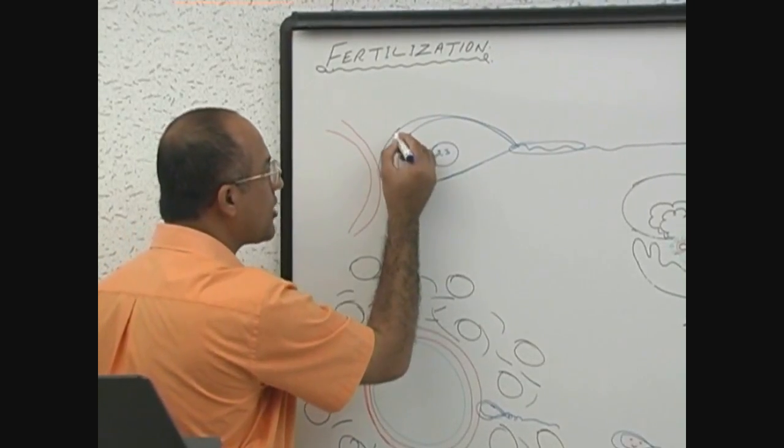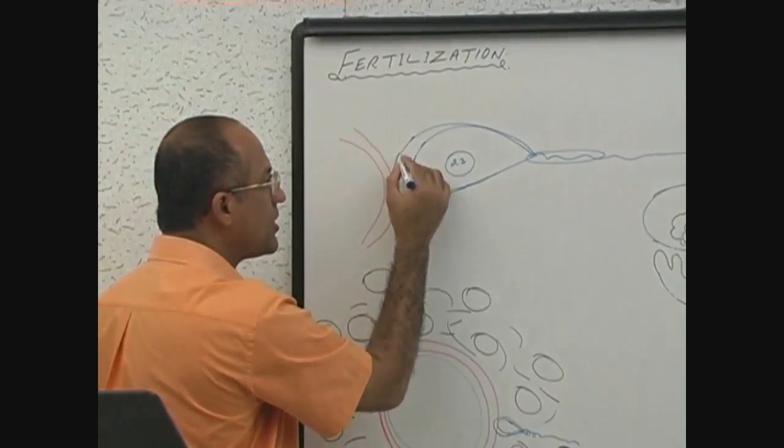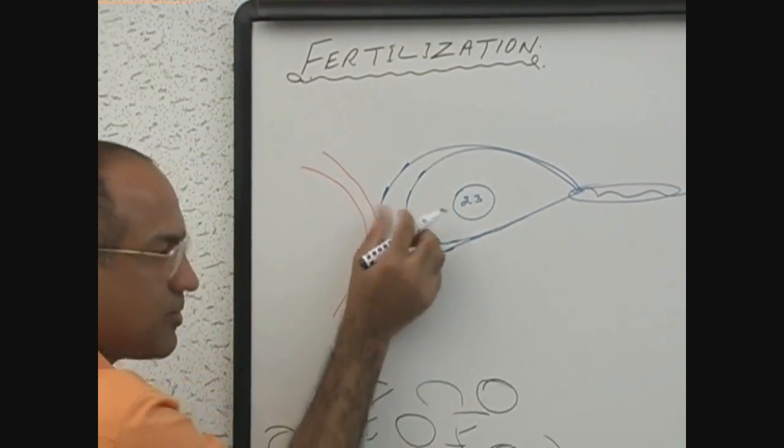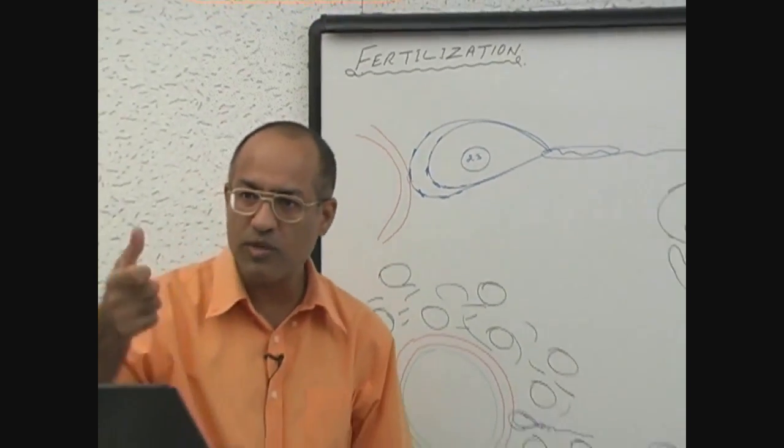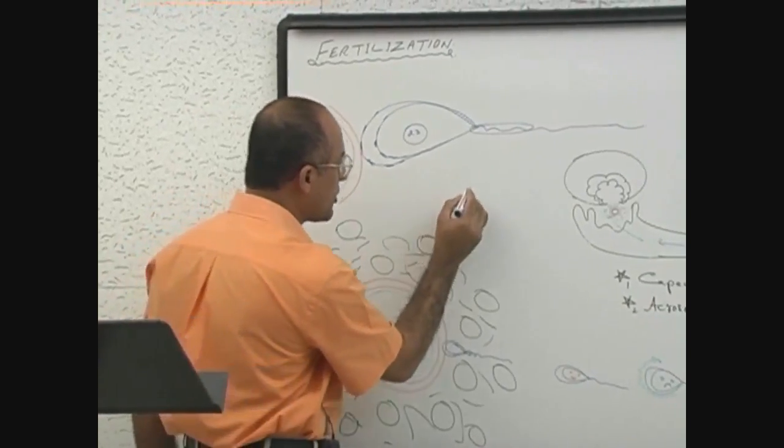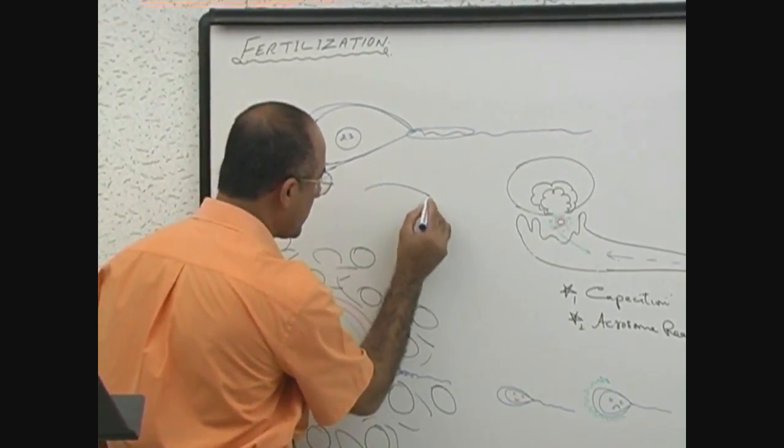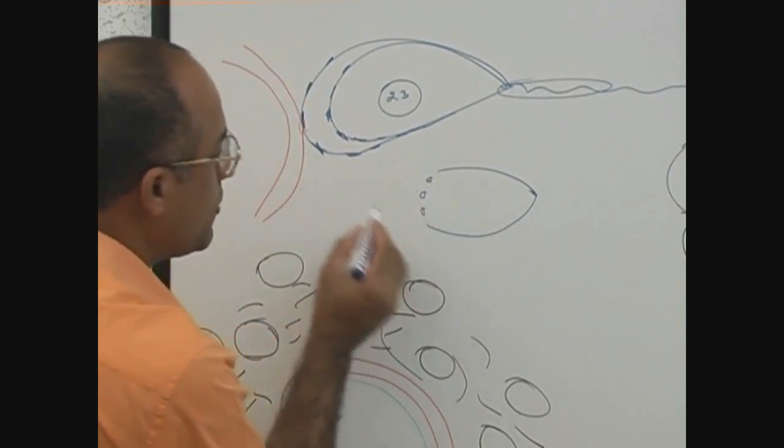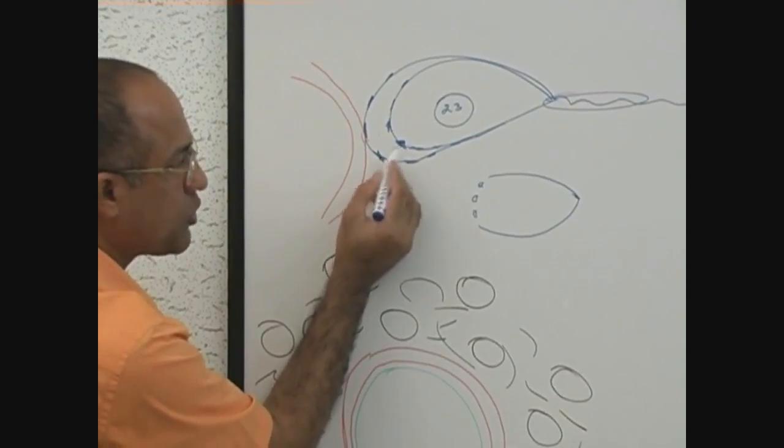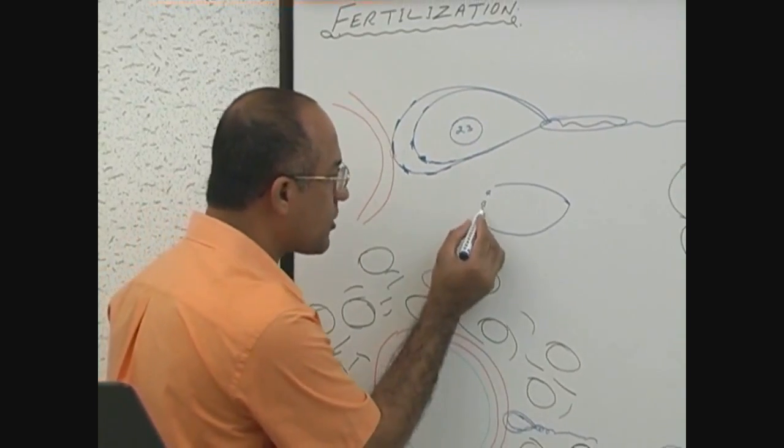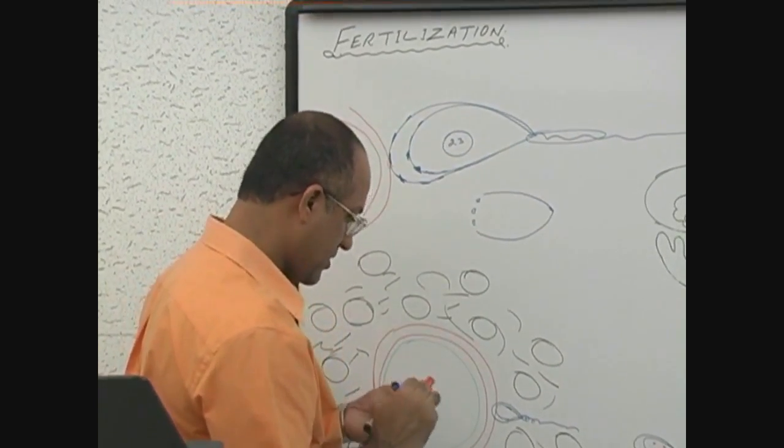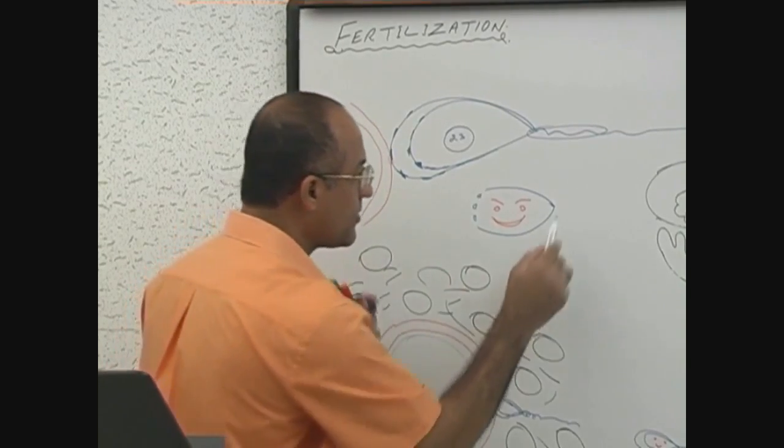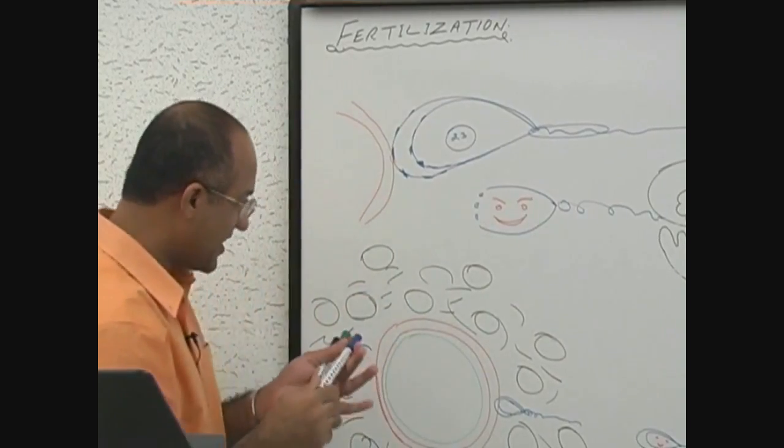During this process at the acrosomal end, the inner membrane and outer membrane fuse at multiple points. When they fuse at multiple points, both membranes are fused, and wherever they fuse, they melt away and apertures are produced, holes are produced. Now it is doing its ultimate function, proud of himself.